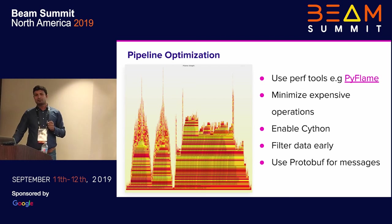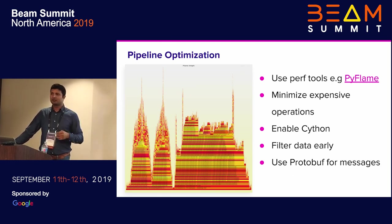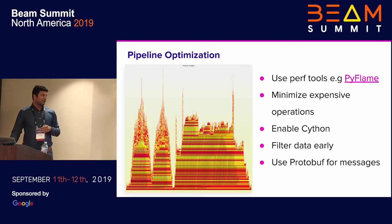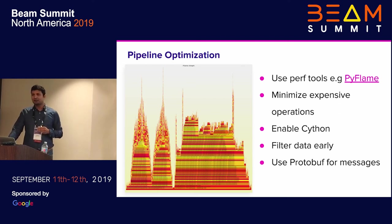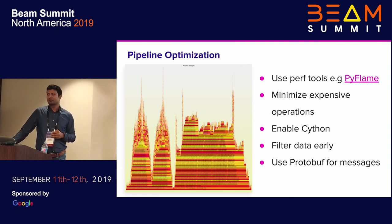Enable Cython — some metrics are only generated if your environment has Cython, and Beam generates them there. When investigating intermittent latency, we couldn't get those metrics until we enabled Cython. Generating too many metrics from the Beam framework can slow things down, so they're scoped to Cython environments where Python execution is faster. Also: filter out data early. If you don't need data in the pipeline, don't pass it through — it wastes network bandwidth and slows you down. We aggressively filter out all unnecessary data upfront. We also use protobuf messages to compact data passing through the pipeline, reducing the amount of data in flight.